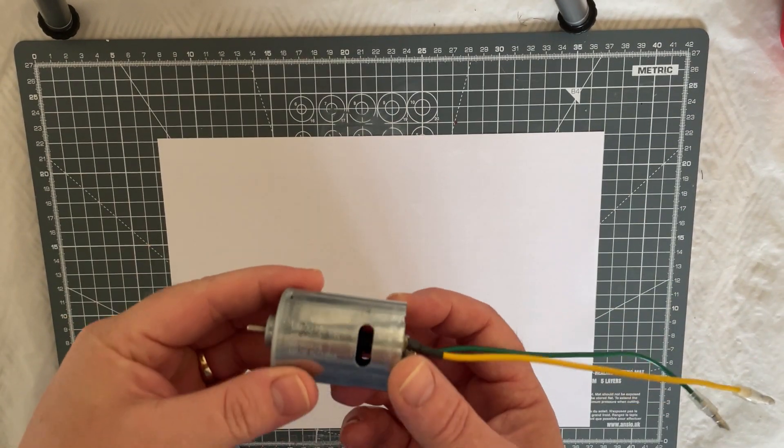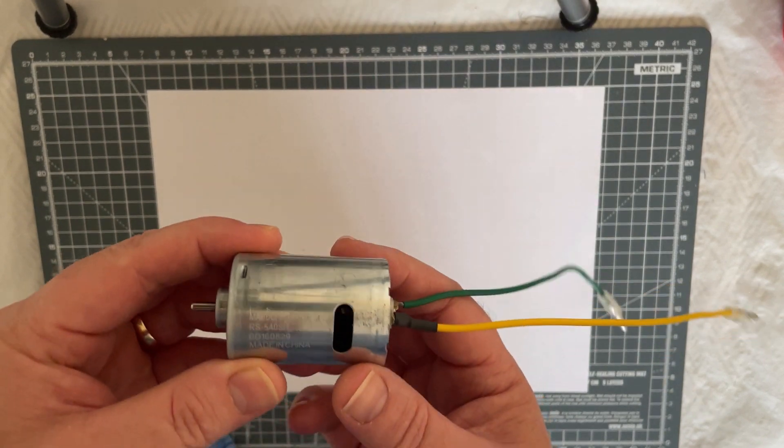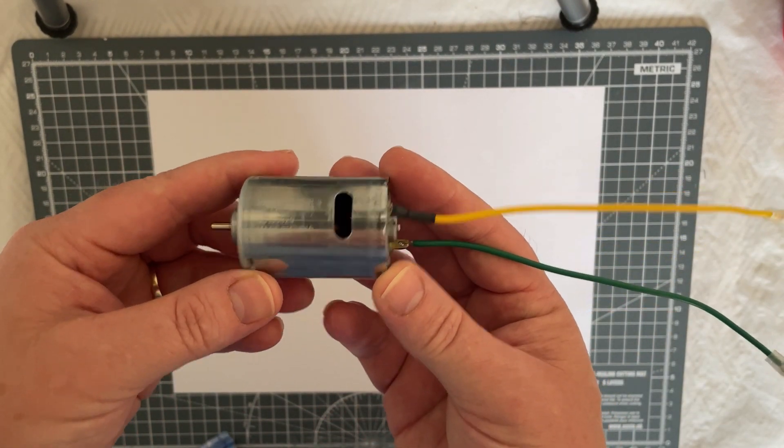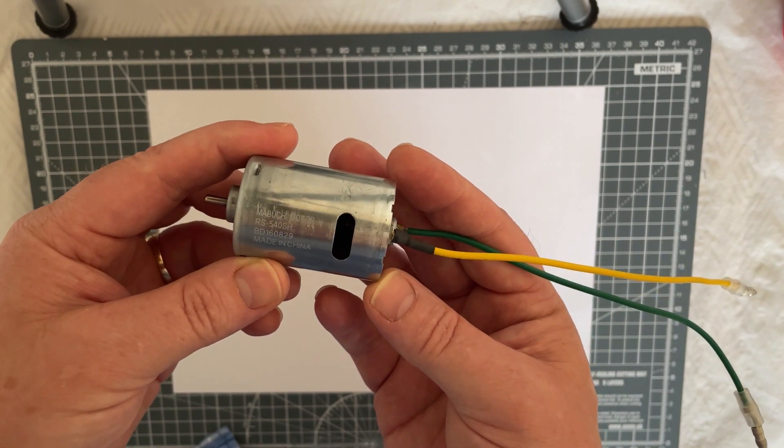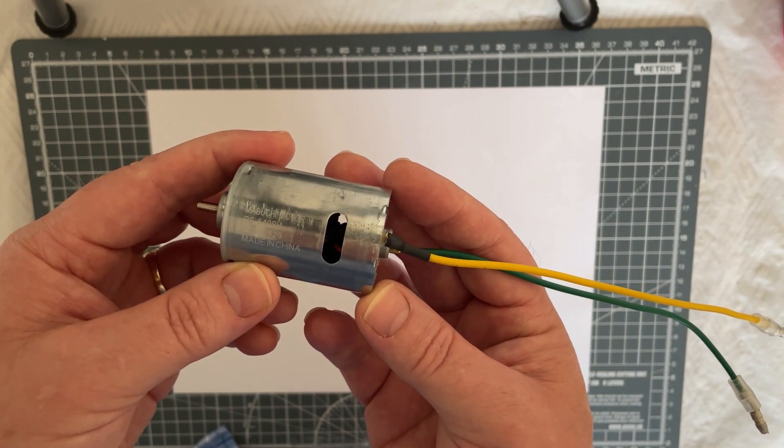Hi, it's John Foster here and we're going to do a bit of an experiment, still RC related. As you can see, this is the Humble 540 motor, this is the Mabushi motor which is an RS-540-SH.